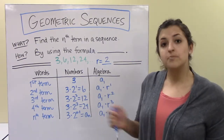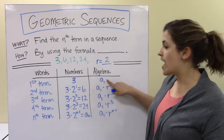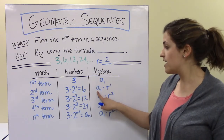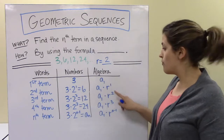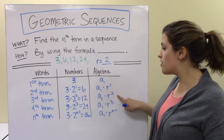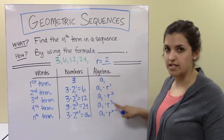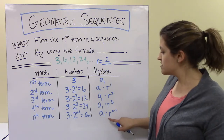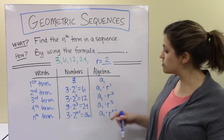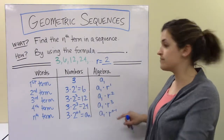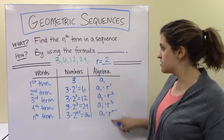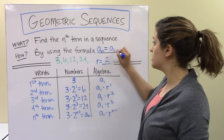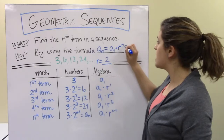Looking at it in algebra, a sub 1 represents our first term. The second term is a sub 1 times r to the first, the third term is a sub 1 times r squared, the fourth is a sub 1 times r cubed. So for the nth term, we have our first term times r to the n minus 1. The formula is: a sub n equals a sub 1 times r to the n minus 1 power.